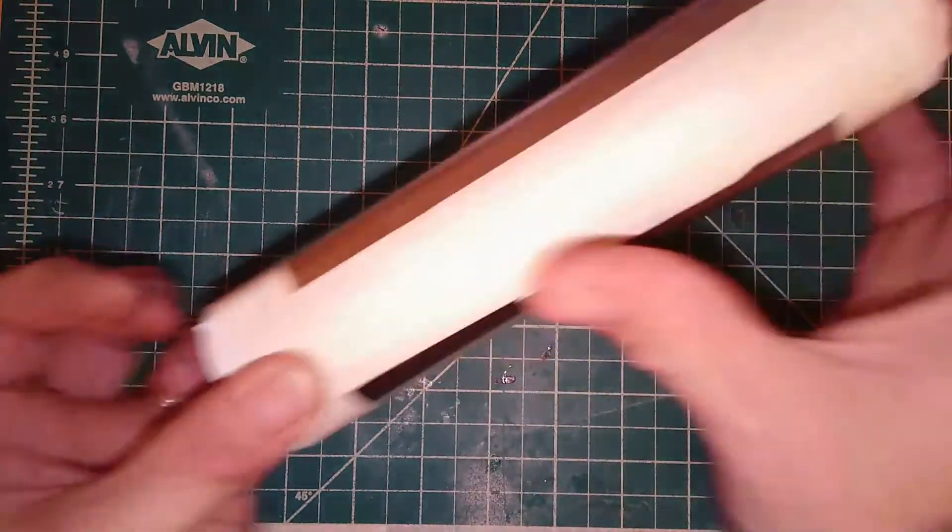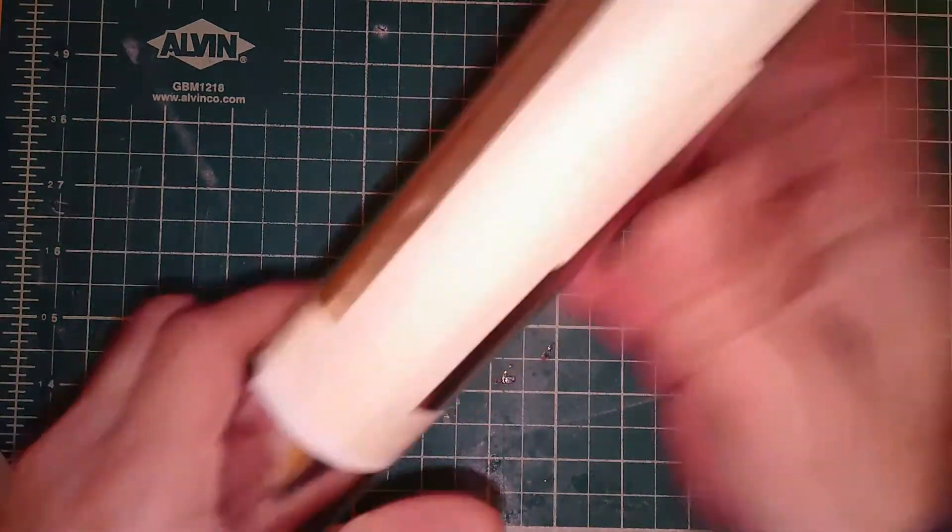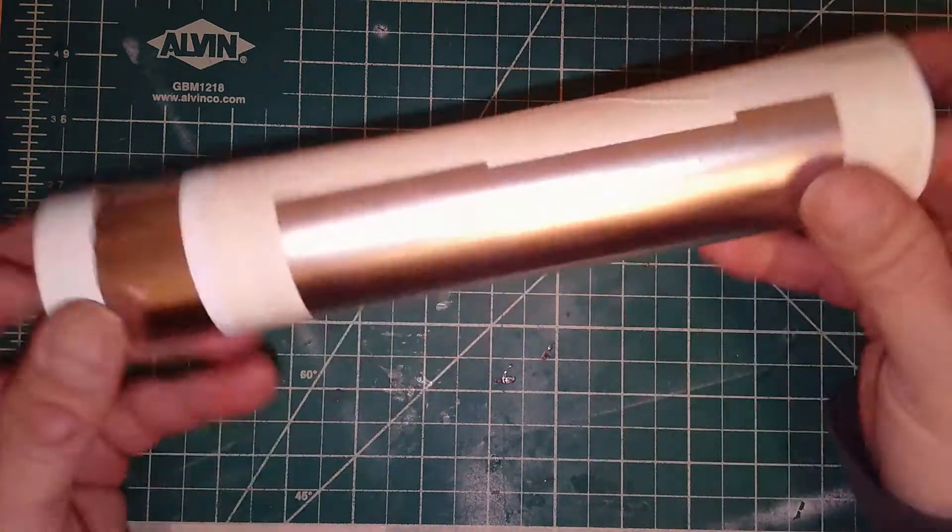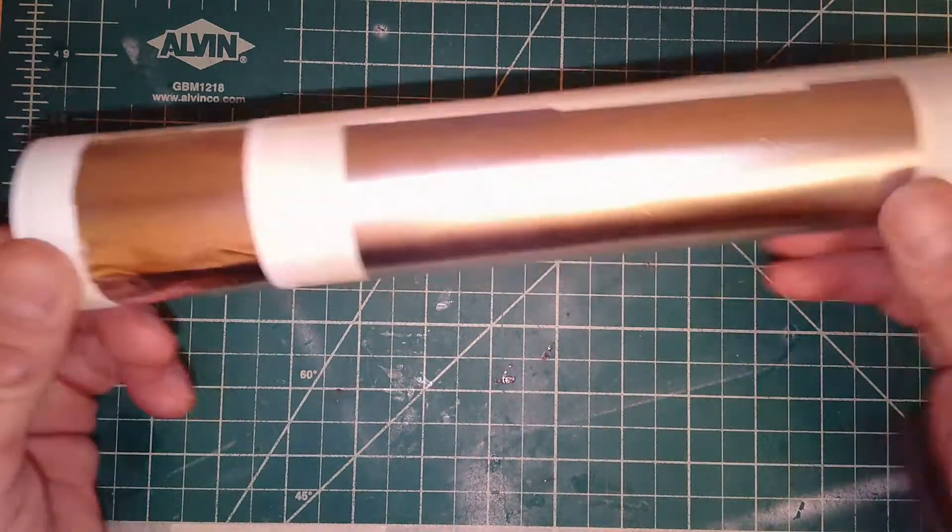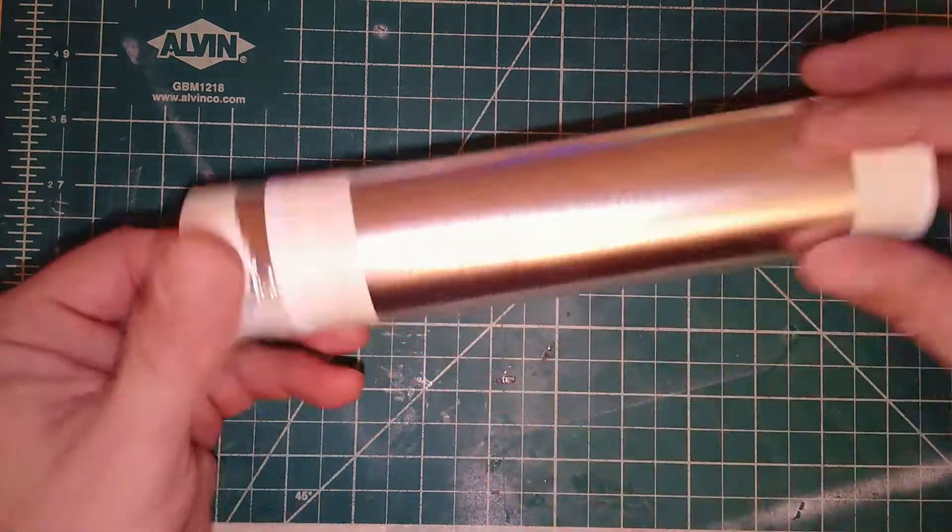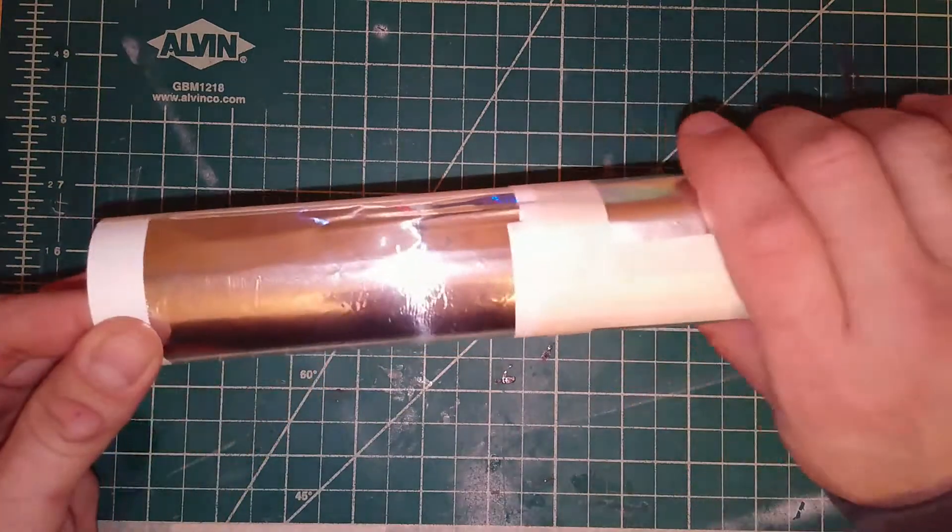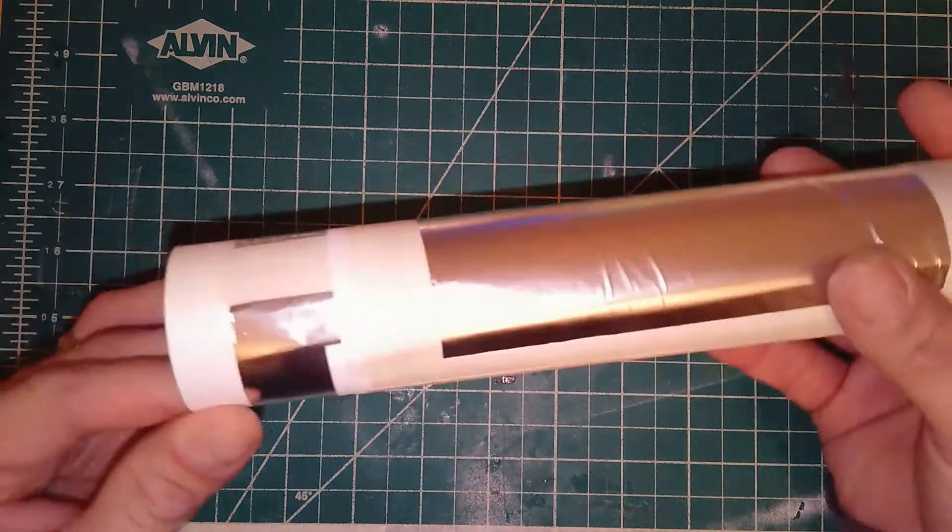Okay, so now I have that seam taped and I should be able to slide my tube. It should slide relatively easily back and forth. That's what we're looking for. If it doesn't, then pull the tape back off there and make it just a tad looser so that you can move it back and forth, because this is how we're going to go about tuning it.